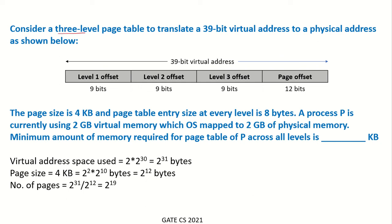Consider a 3-level page table to translate a 39-bit virtual address to a physical address as shown below. The page size is 4KB and the page table entry size at every level is 8 bytes. A process P is currently using 2GB virtual memory which the OS mapped to 2GB of physical memory. The minimum amount of memory required for the page table of P across all levels is how much kilobytes?